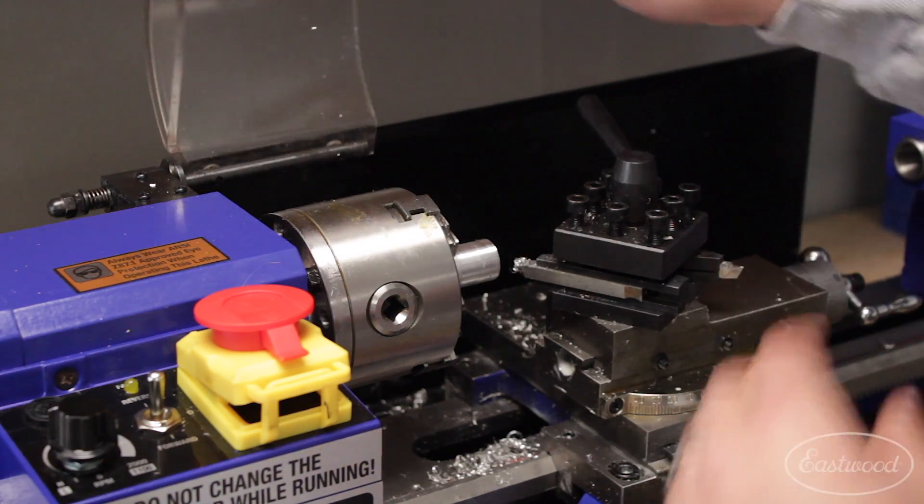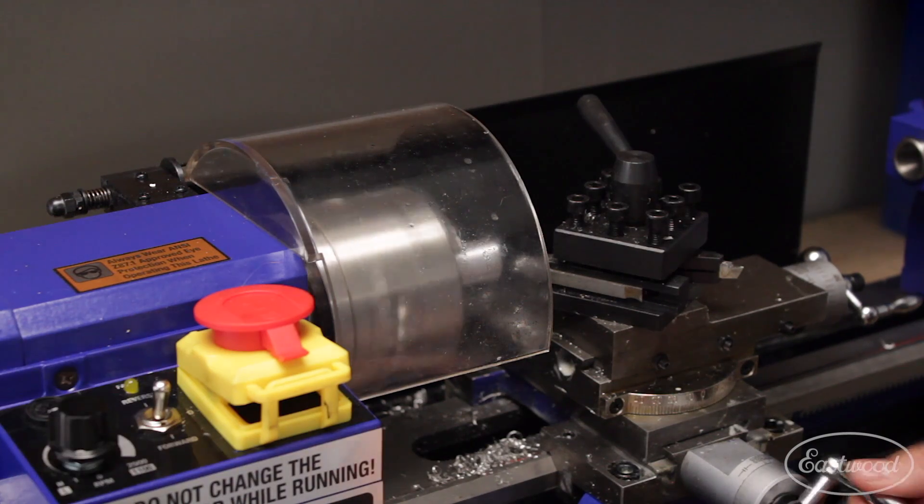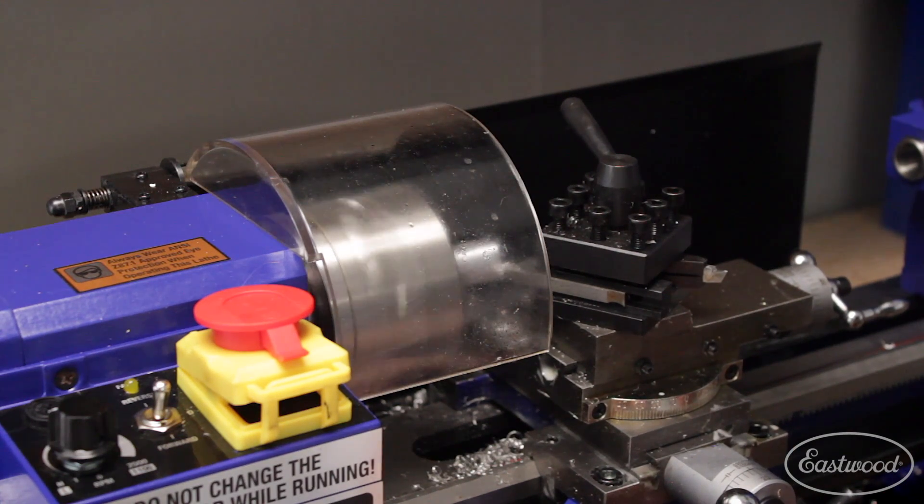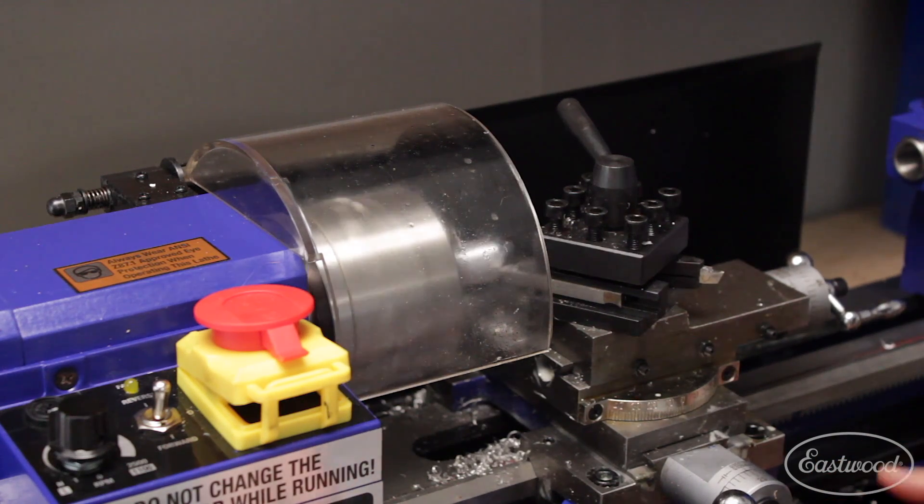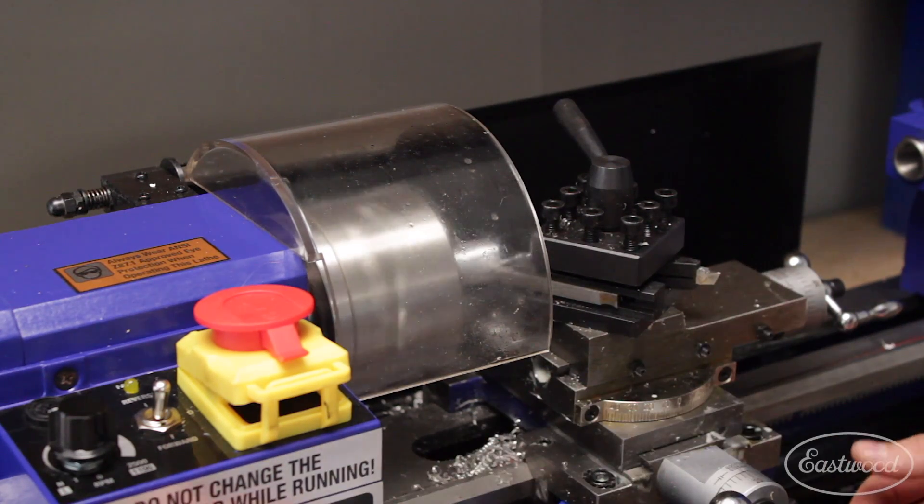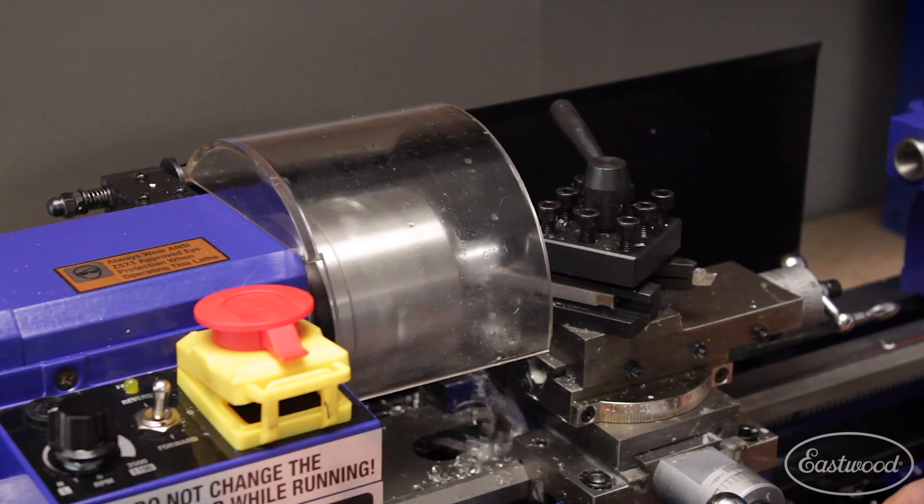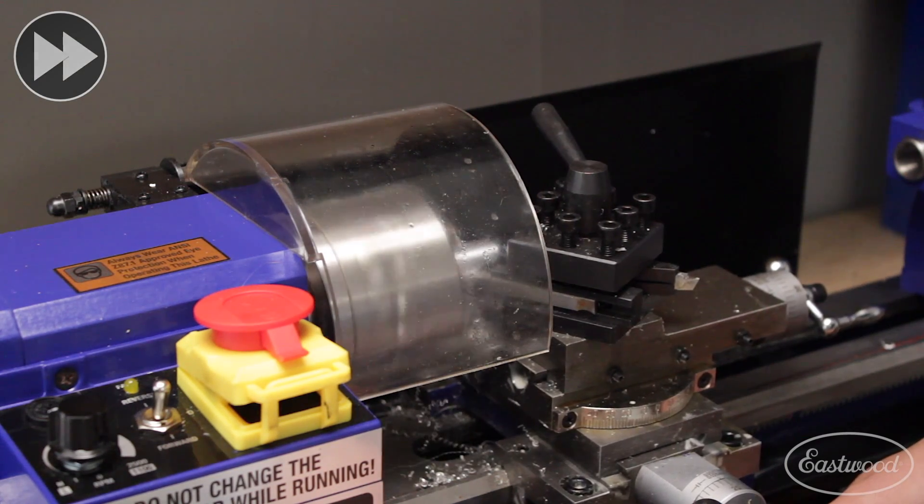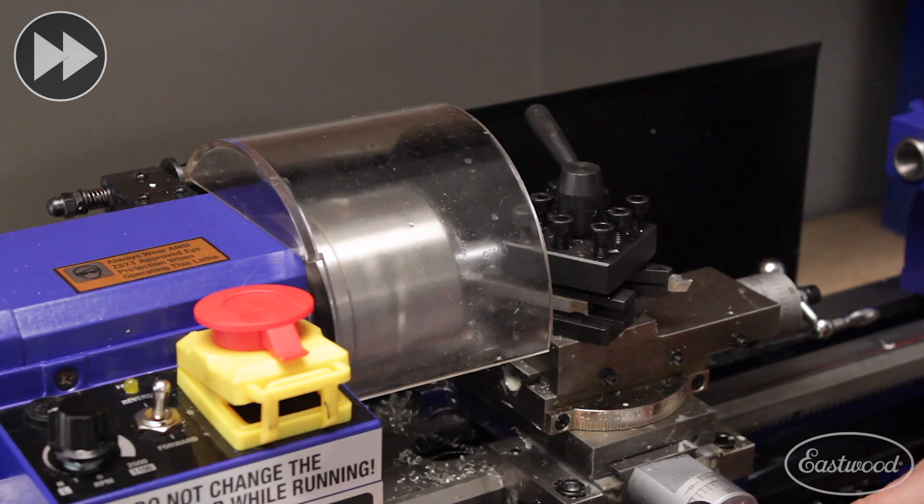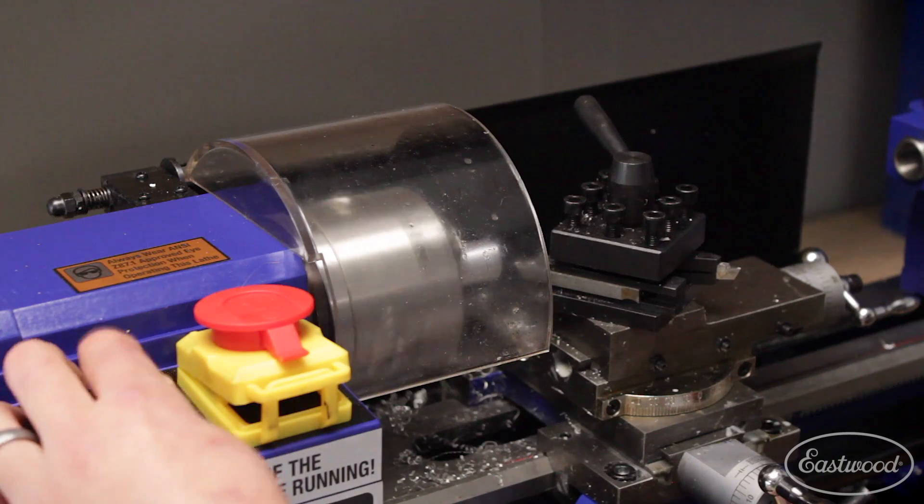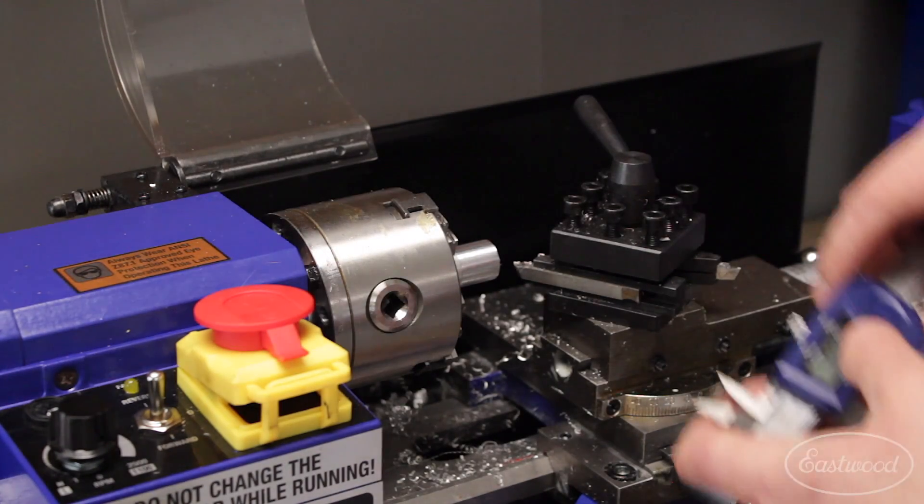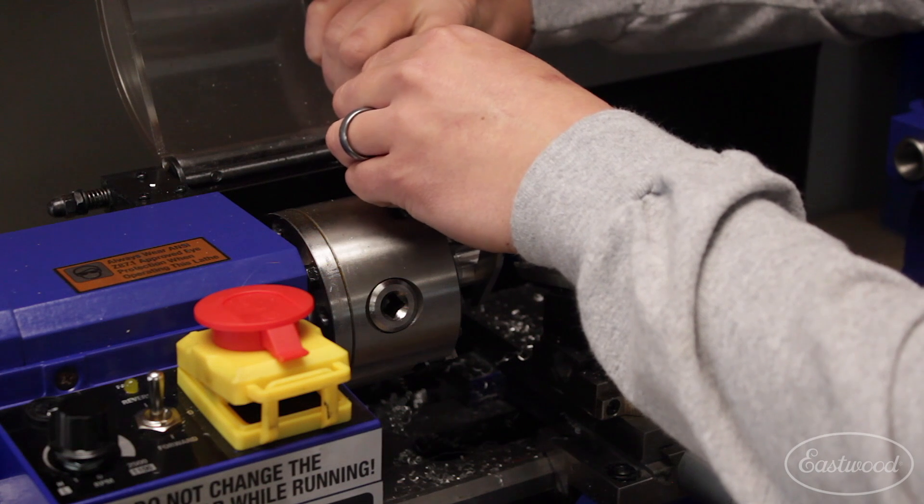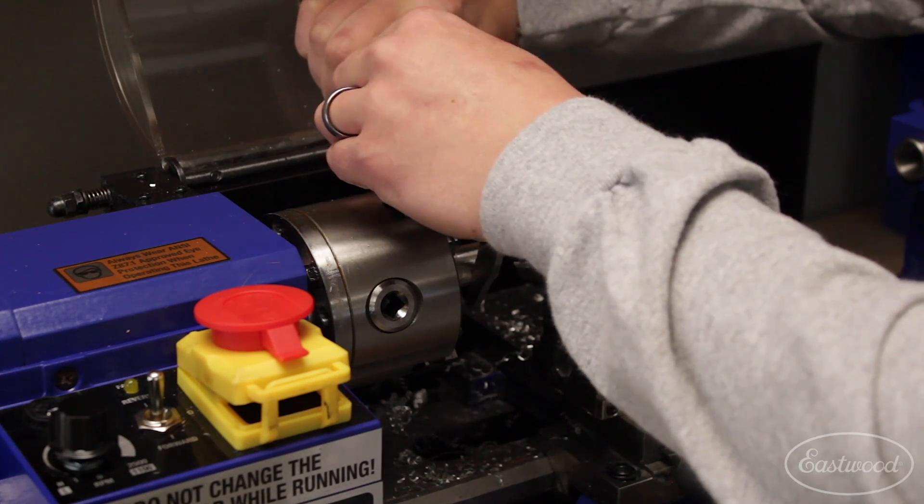All right, everything looks good. So we're going to keep on cutting and remove some more material. So here we can also use our power feed and allow this to keep going on its own. That's going to give you a little bit better of a surface finish and be a little more consistent. So now we're looking to go down to seven hundred thousandths. So I'm just going to check every cut. You don't have to necessarily check every cut. Just so I got an idea of where we're going.